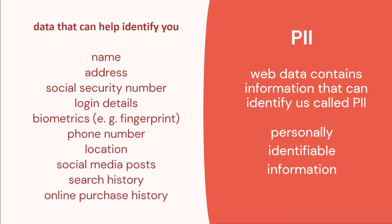We have information that can identify us. This is called personally identifiable information, or PII for short, and this includes details like your ID number, social security number, your name, address, login details, social media posts, or even your online search history.